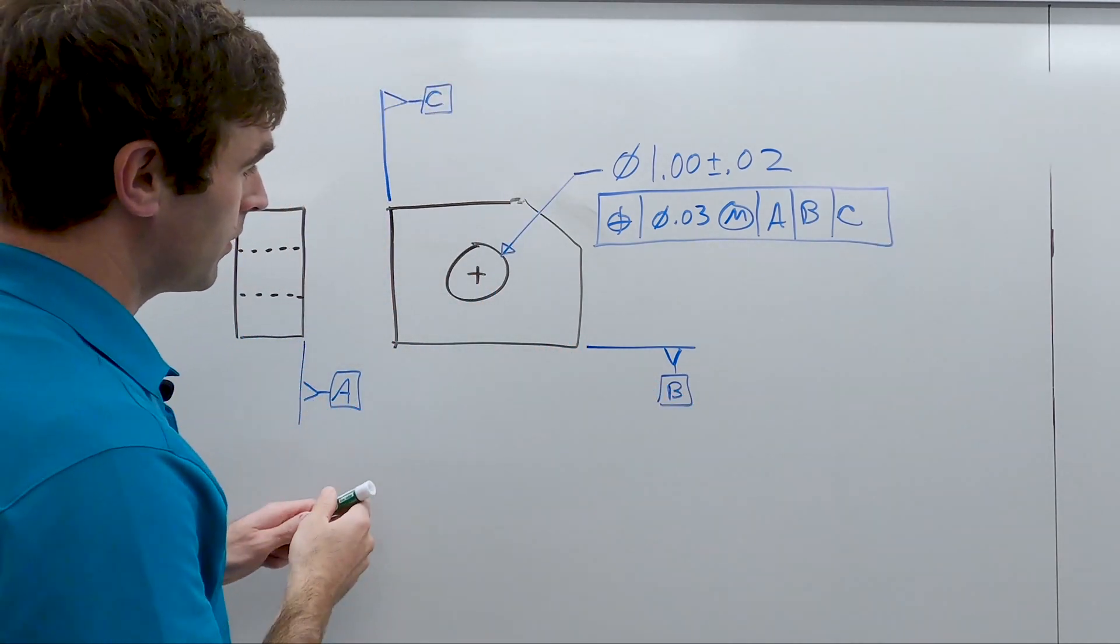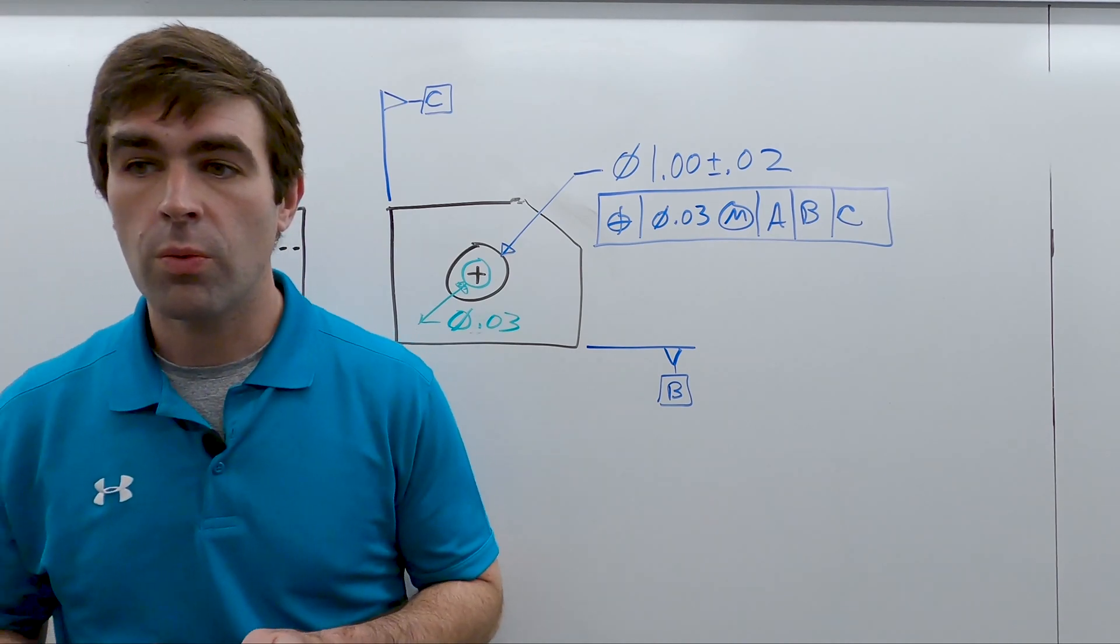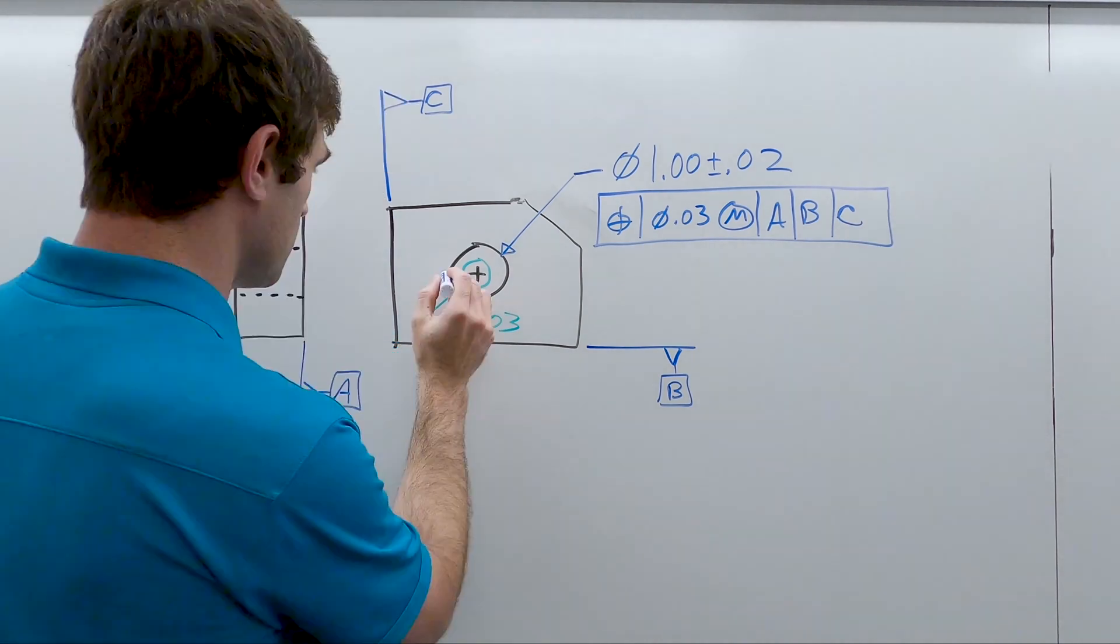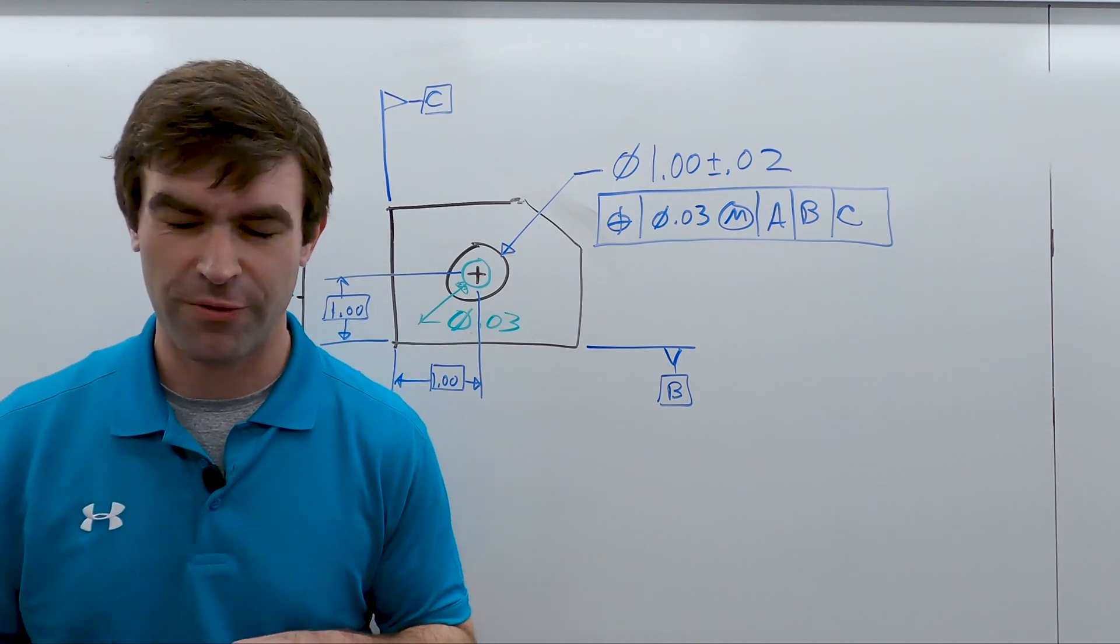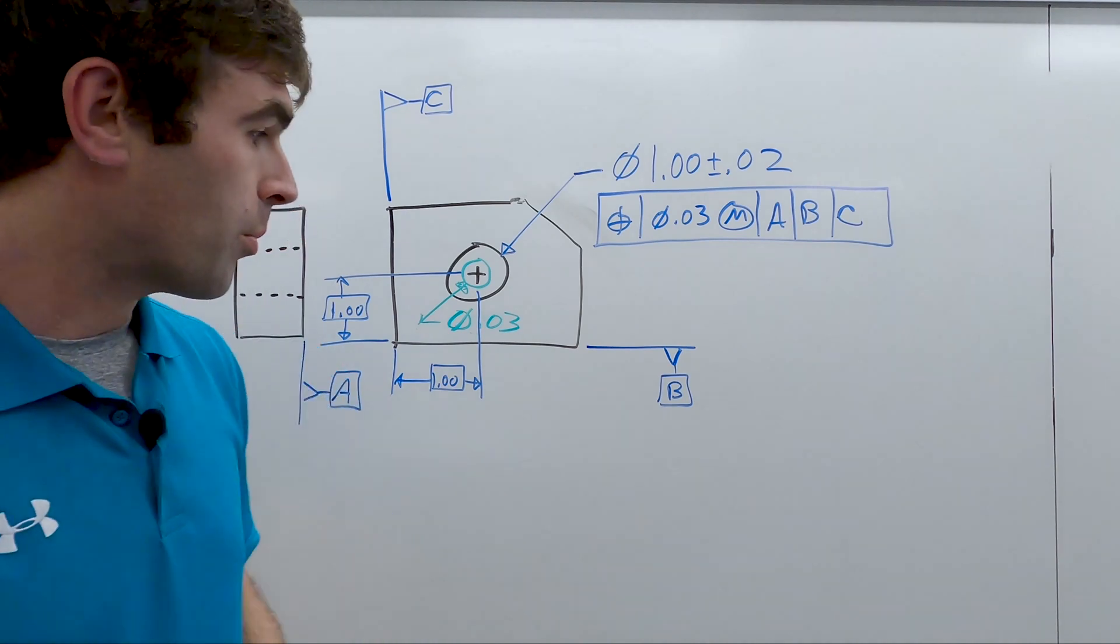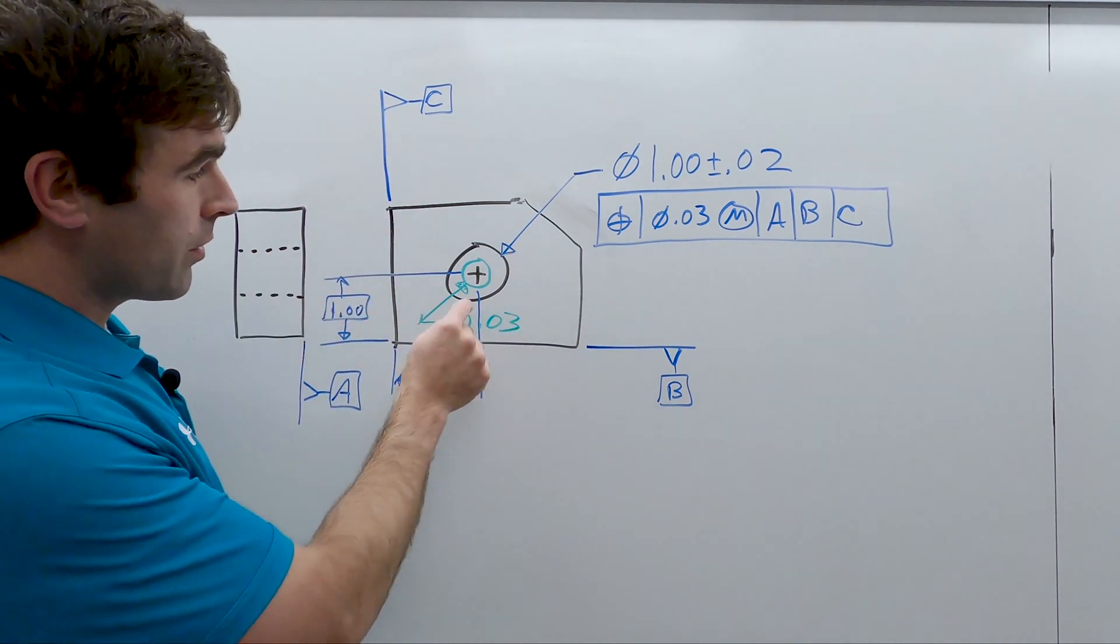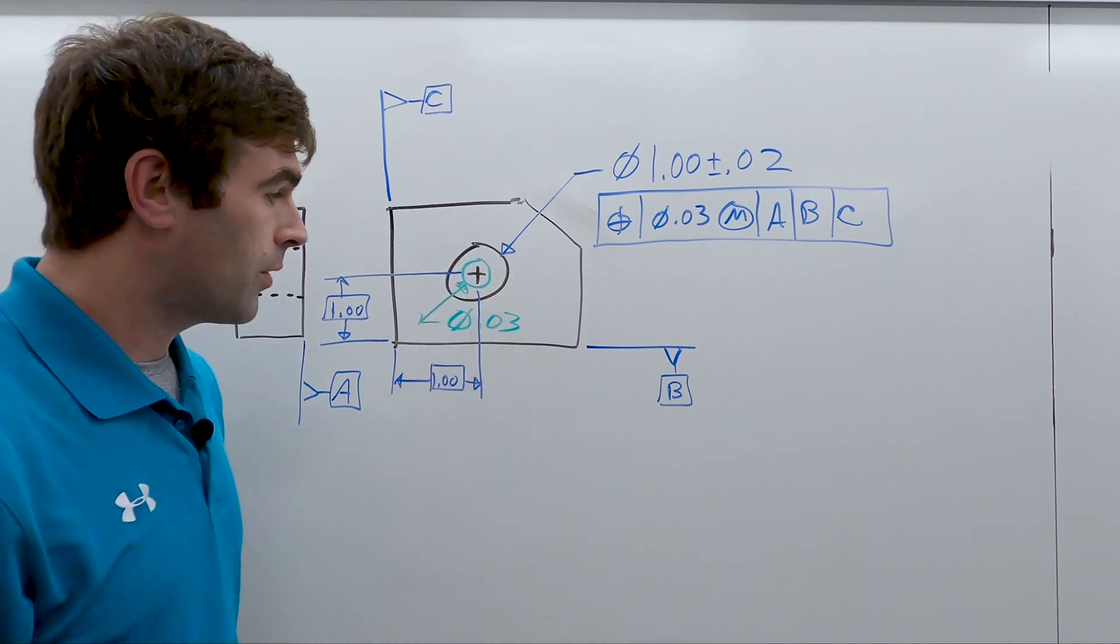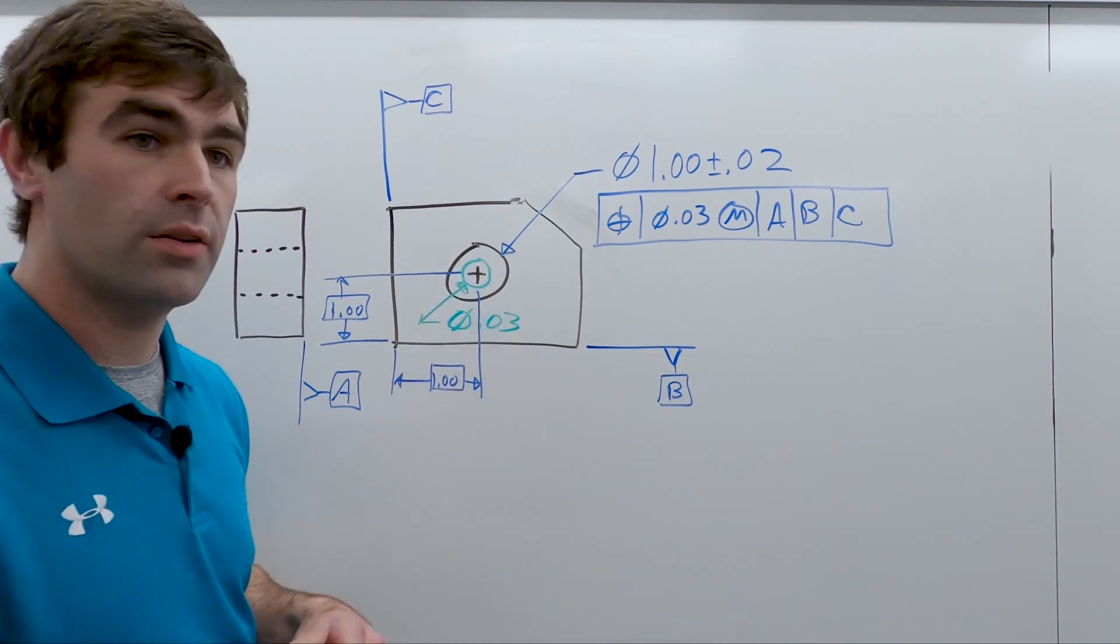So we can imagine we have a tolerance zone where that hole should be. I forgot to put basic dimensions in there, but it's not too big of a deal for now. Remember, the basic dimensions come from our datums. We measure the tolerance zone from our basic dimensions, which lead to our datums.